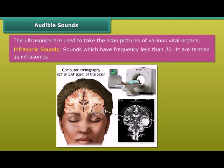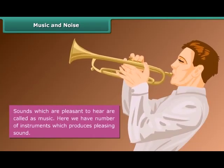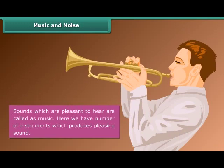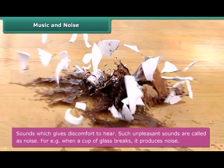Audible sounds are those which we can hear, ranging from about 20 hertz to 20,000 hertz. Sounds above 20,000 hertz are called ultrasonic sounds — squirrels, for example, communicate with each other at frequencies greater than 20,000 hertz. Ultrasonics are used to take scan pictures of various vital organs. Sounds with a frequency less than 20 hertz are termed infrasonics.